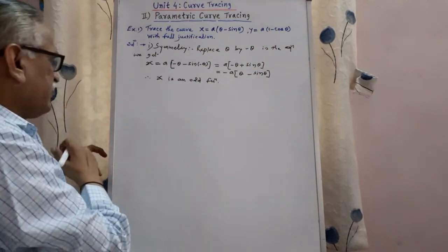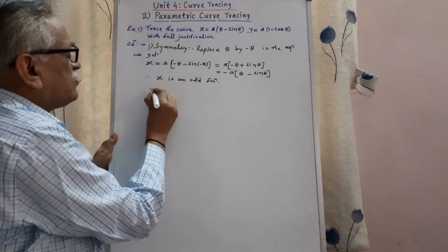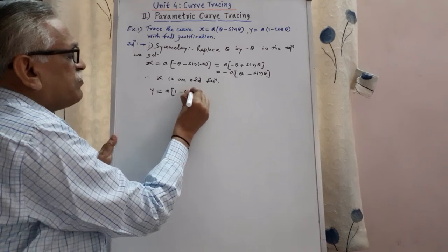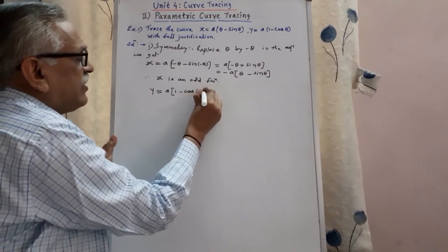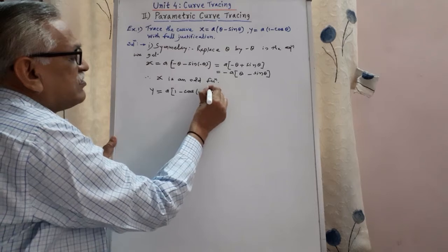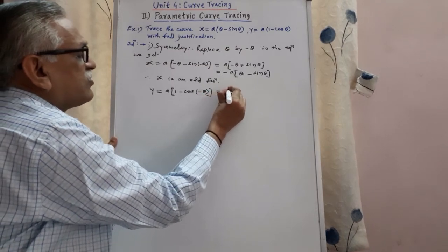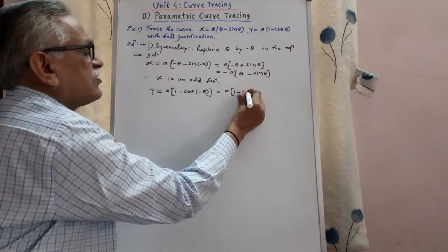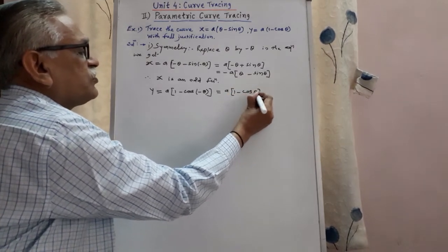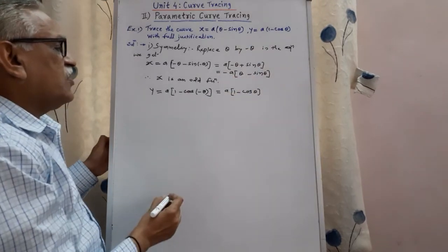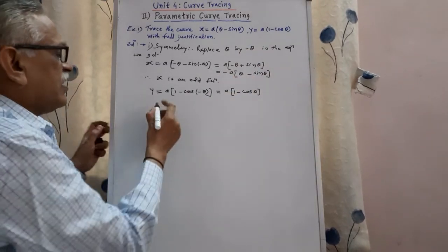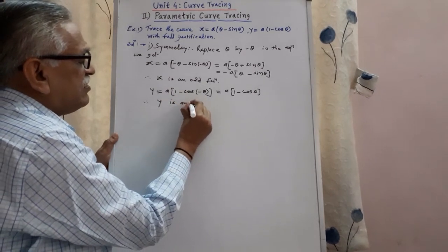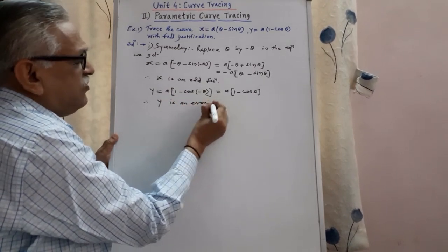Then we go for y. y equals here a into 1 minus cos of minus theta, and that equals cos minus theta is cos theta. Therefore, it is 1 minus cos theta, no change in the term, or that equation remains as it is, and therefore y is an even function.